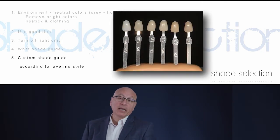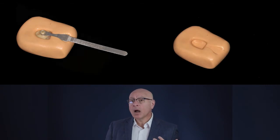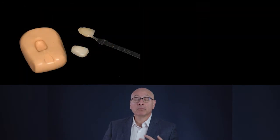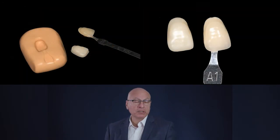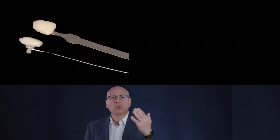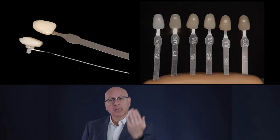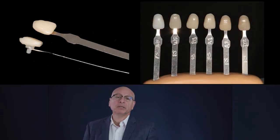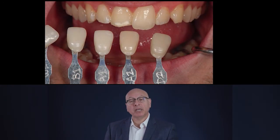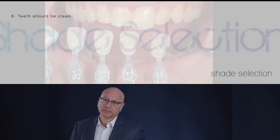I make my shade guide from the material I'm going to use. I take an impression, fill it with the brand of material I use, make the most popular shades I use in my practice, polish them, and glue a little metal or plastic platform stick in the background, stuck in putty material with the shade name written on it. That's how I select my shade — I don't have to go through the VitaPan shade guide.